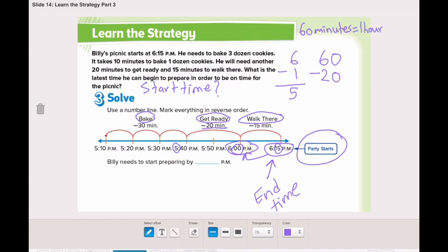So, 60 minus the 20 minutes to get ready is 0 minus 0, 0. 6 minus 2, 4. So, it will be 5:40 p.m.